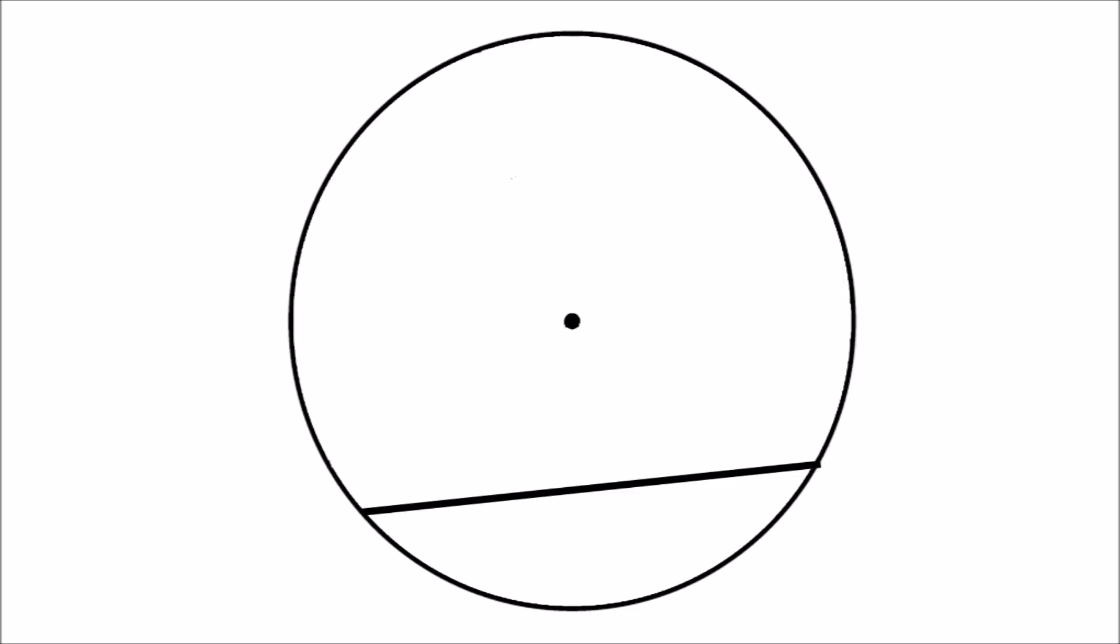The chord forms two segments. In one segment we are going to draw two triangles that share the chord as one of their sides. We are going to label the angles opposite the chord in each triangle. I have chosen the symbols A and B.